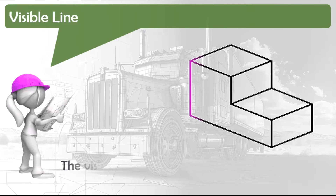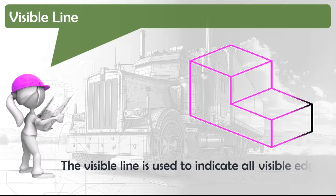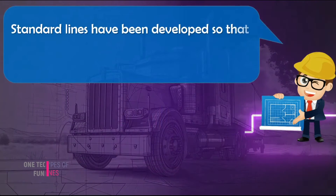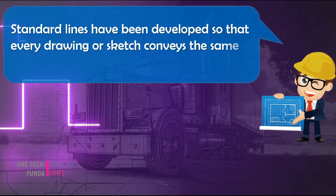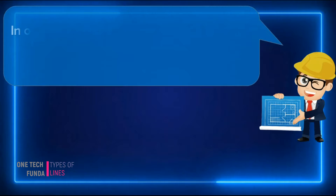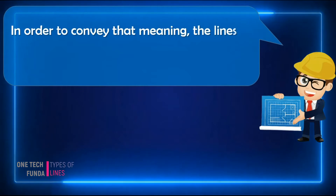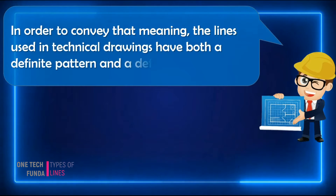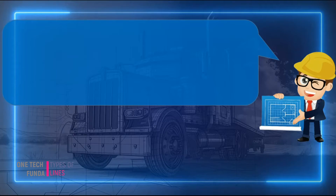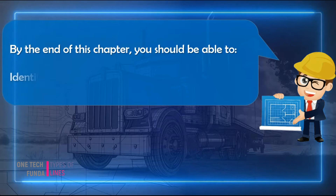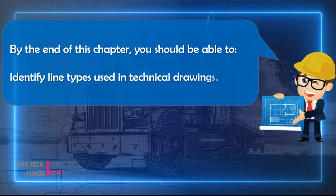The visible line is used to indicate all visible edges of an object. Standard lines have been developed so that every drawing or sketch conveys the same meaning to everyone. In order to convey that meaning, the lines used in technical drawings have both a definite pattern and a definite thickness. By the end of this chapter, you should be able to identify line types used in technical drawings.